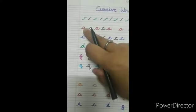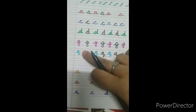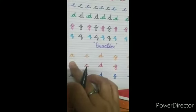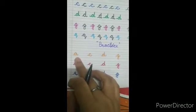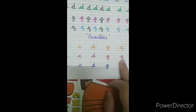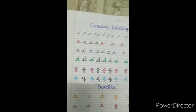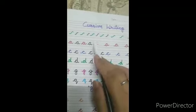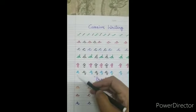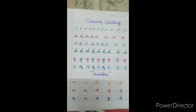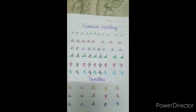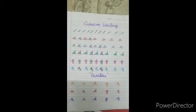Likewise we can make a, c, d, g, and q through this one pattern — that means we can make five letters. I hope all of you will revise this pattern and practice these five letters at home. I'll come back in my next video for the next pattern.